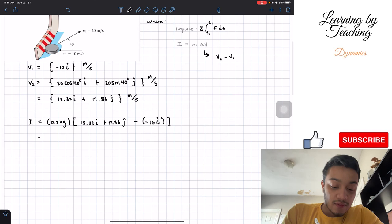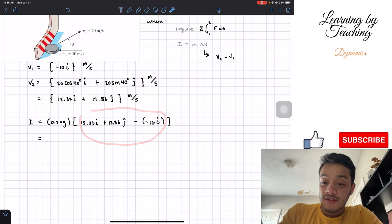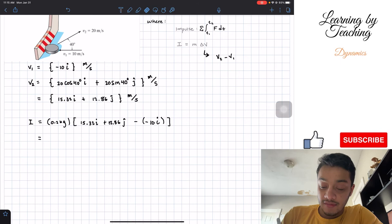We can go ahead and simplify this big bracket. This minus and this minus will become a positive. So I'm going to put a positive in between. We have an addition.